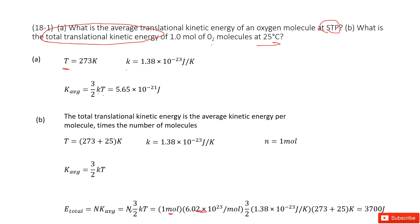N is the number of molecules. Use the constant times the mole number, and then times 3 over 2 kT. Input all the known quantities to get the answer. Thank you.